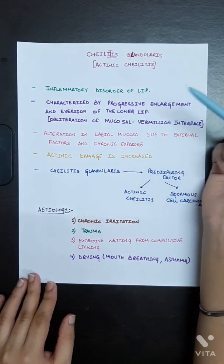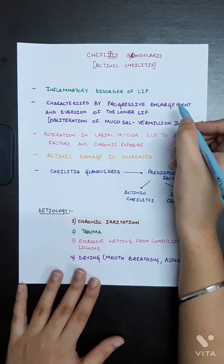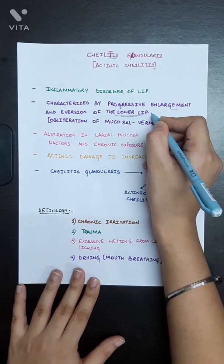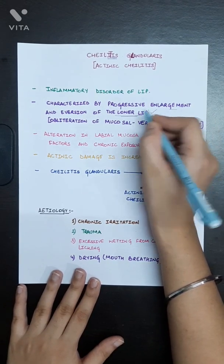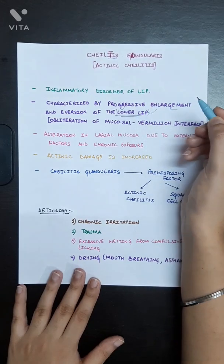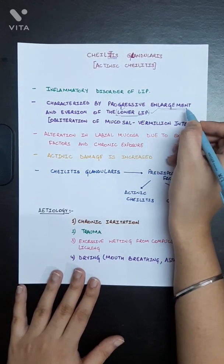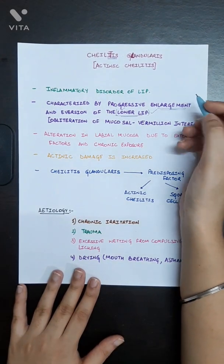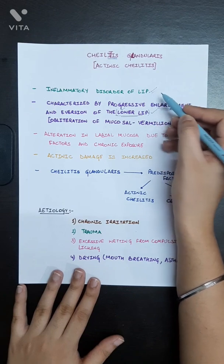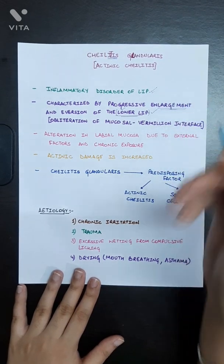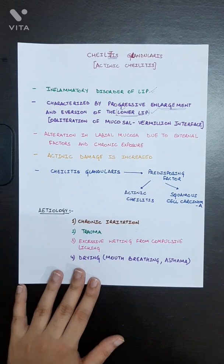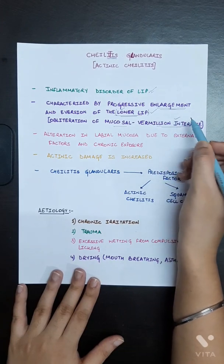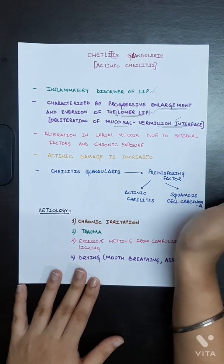Cheilitis Glandularis is characterized by progressive enlargement and eversion of the lower lip. It occurs on the lower lip, which becomes enlarged and everted outward. Due to eversion of the lower lip, there is an obliteration of the mucosal-vermilion interface — this interface is disrupted in Cheilitis Glandularis.